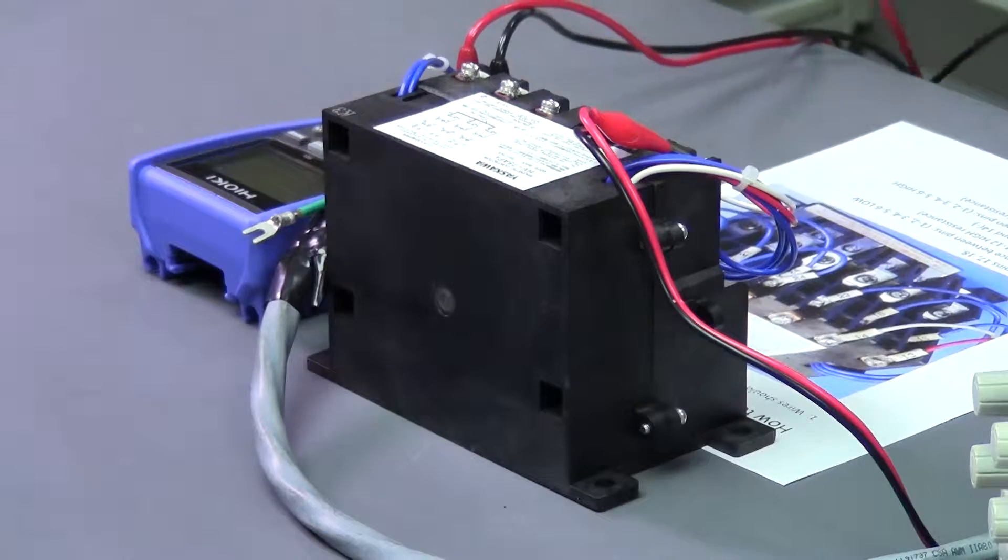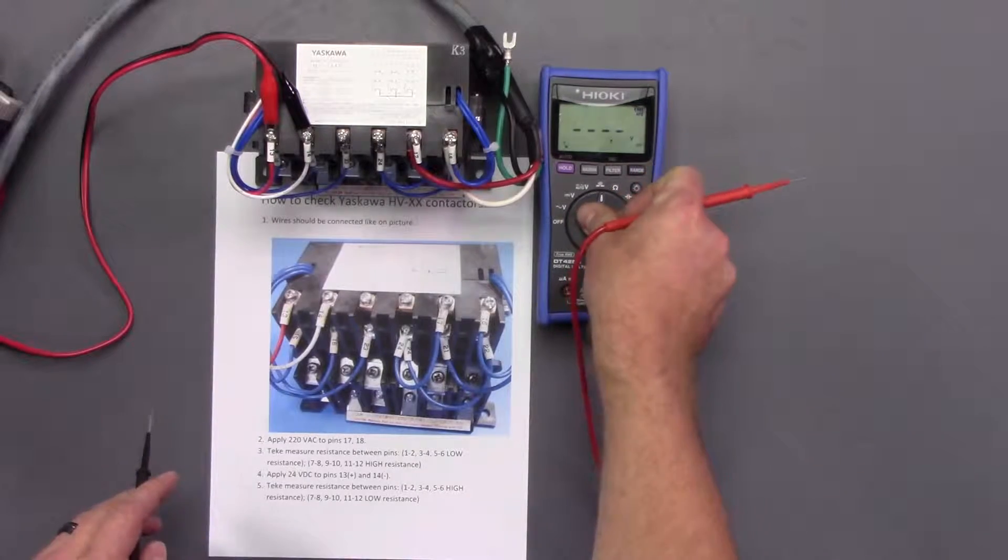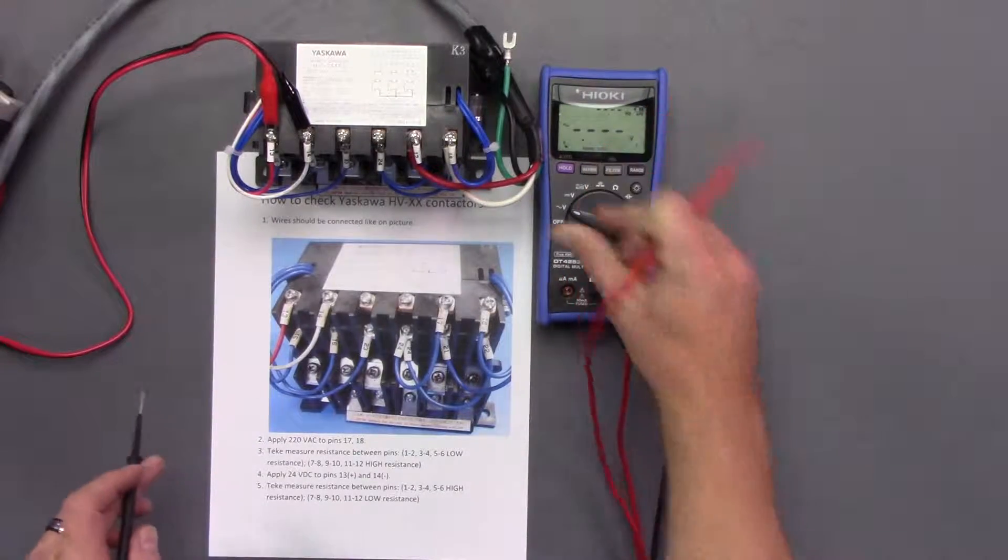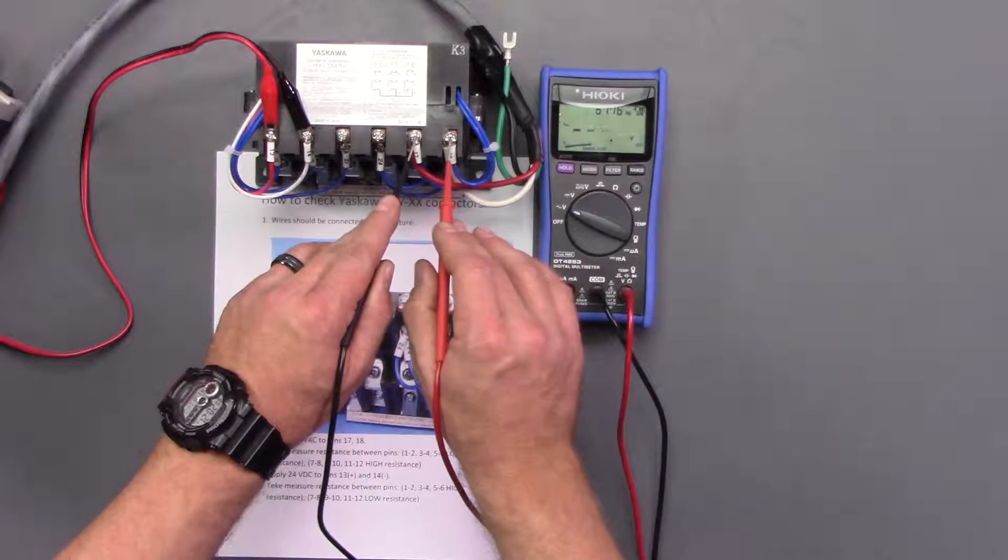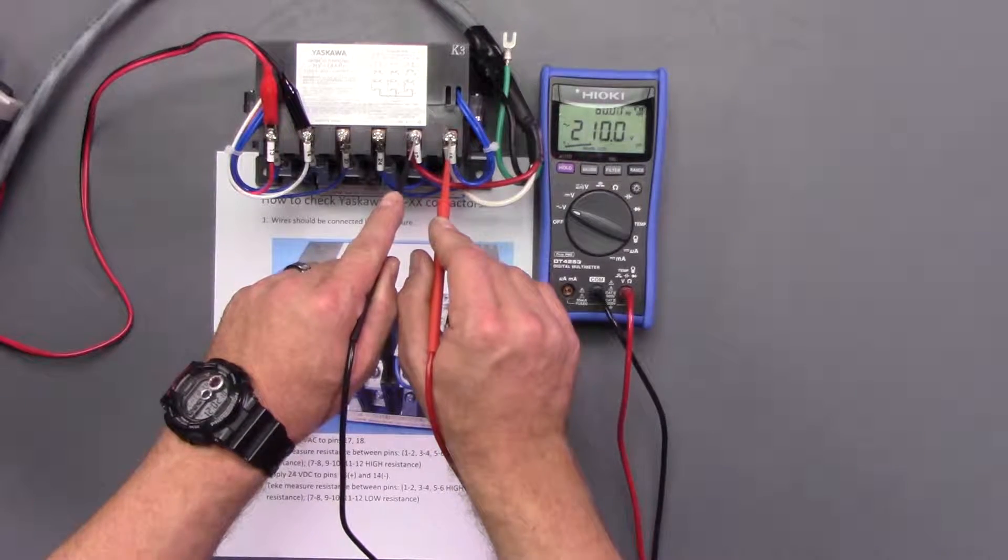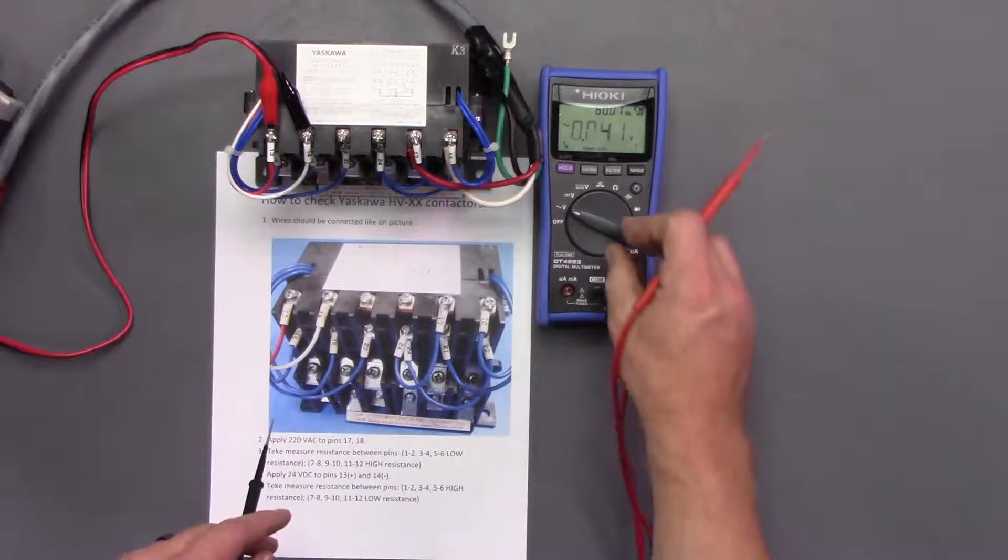So the first thing I'm going to do is take my multimeter and put it to the AC function. I'm going to check between pin 17 and 18. We'll get 209. That's fine.